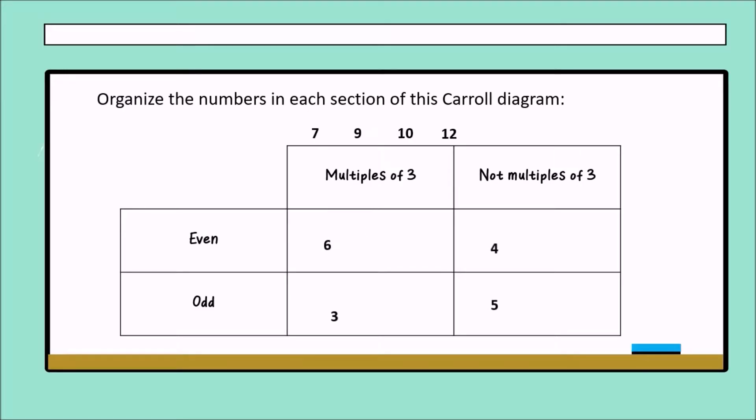Six. Perfect. Is an even number and multiple of three because two times three equals six. Very good.